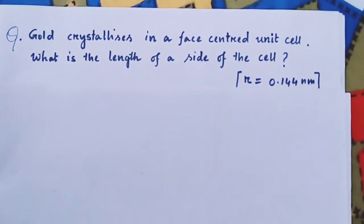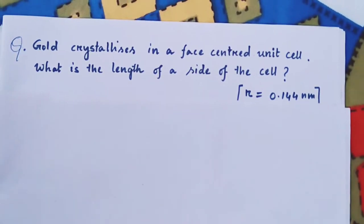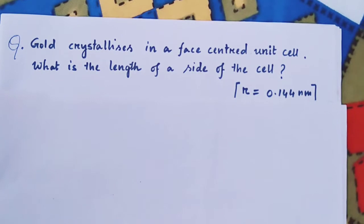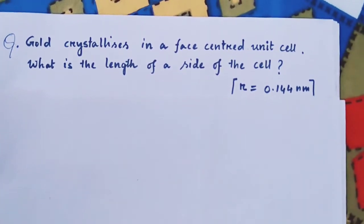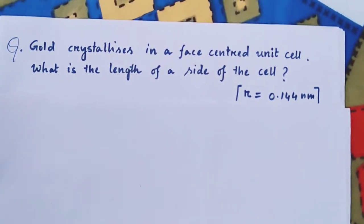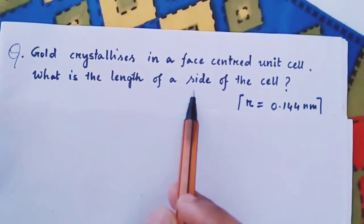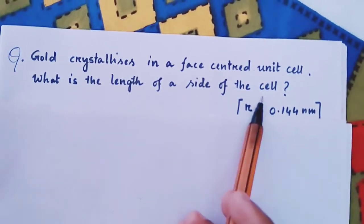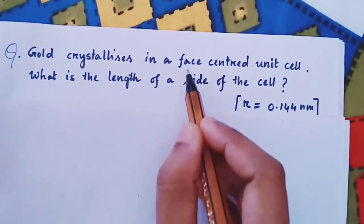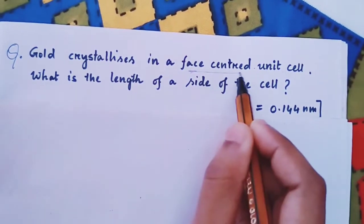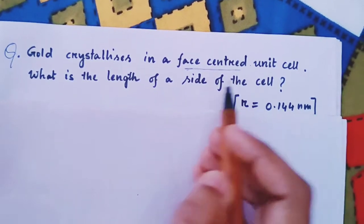Hello students, welcome to my channel. Today's question is: gold crystallizes in a face-centered cubic (FCC) unit cell. What is the length of a side of the cell?